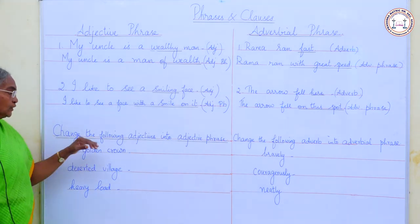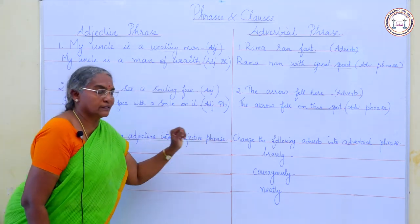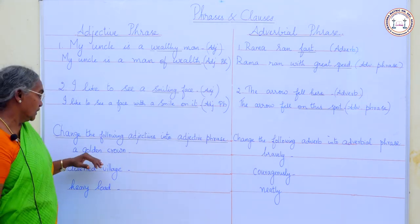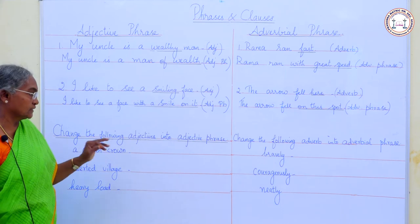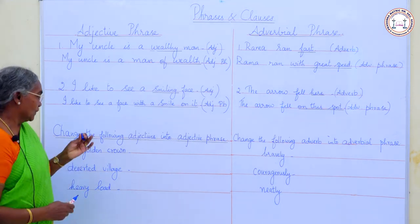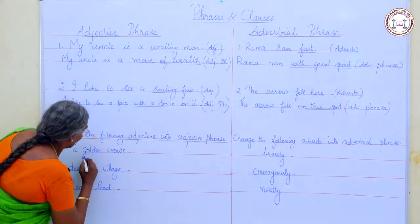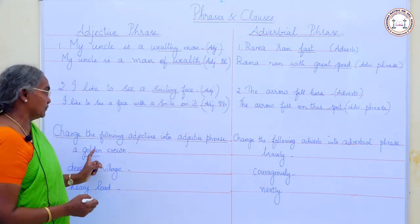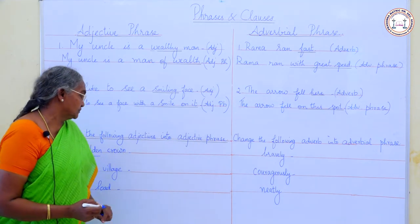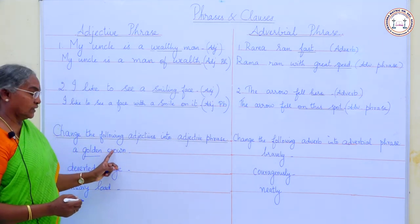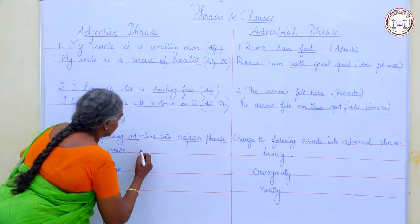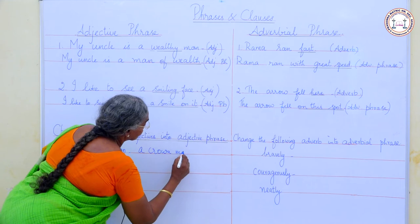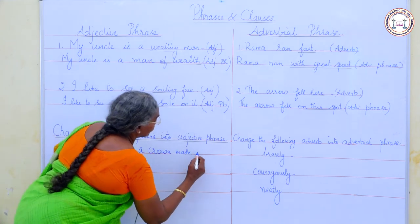Now, change the following adjectives into adjective phrases. 'He wears a golden crown.' What is the adjective here? 'Golden' is the adjective. Can you replace this adjective with an adjective phrase? 'A crown made of gold.' So, 'made of gold' is the adjective phrase replacing 'golden.'